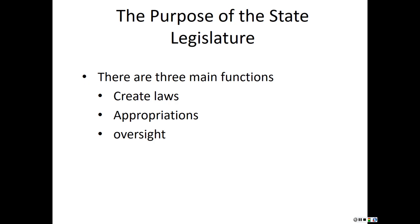The third function is oversight. The state legislature passes bills, but it's up to the executive branch to implement those laws. The legislature has the authority to call people over from the executive branch to testify in front of committees — to let them know what's going on, whether a bill is working, and what improvements are needed.